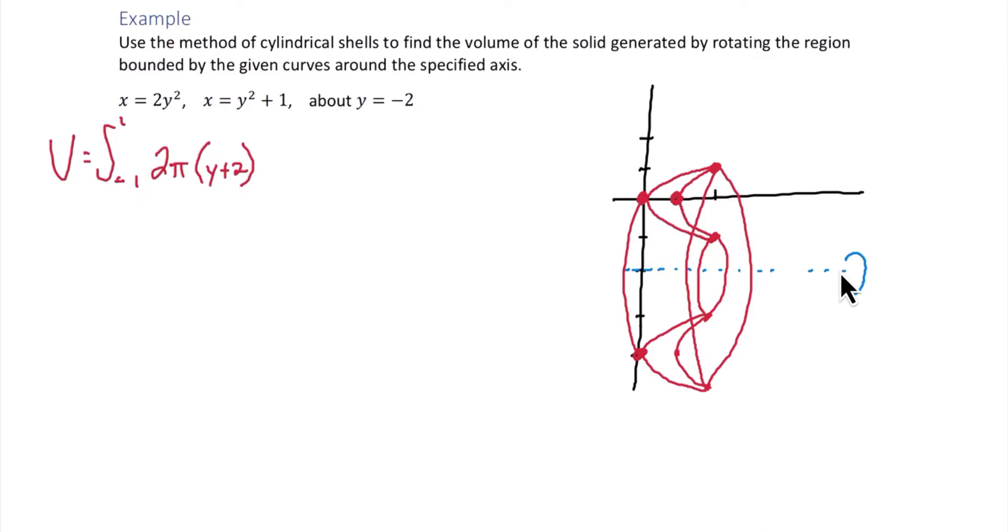The height of this is going to be this curve minus this curve. So we have y squared plus 1 minus 2y squared. That is 1 minus y squared. And then the thickness dy.